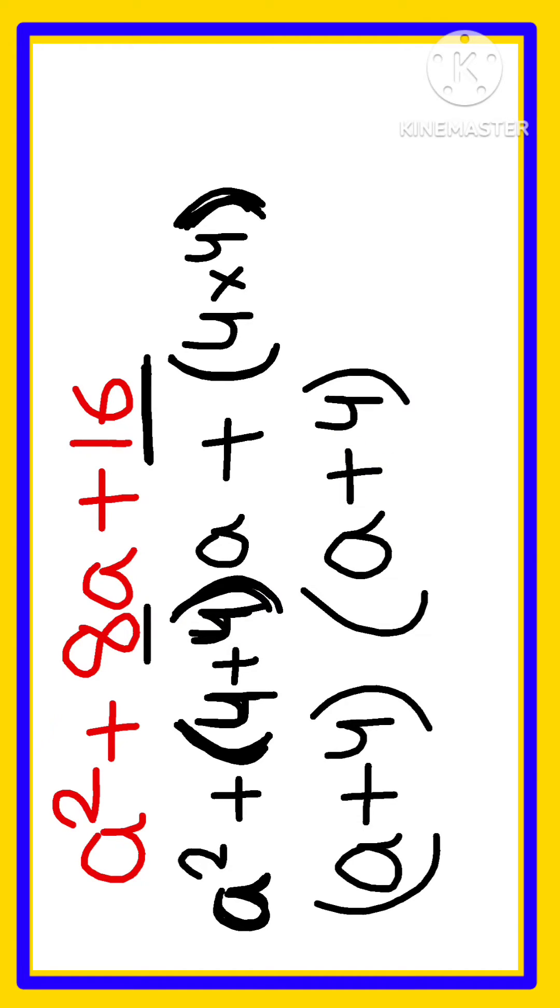You can get separate numbers in other cases, but remember: the coefficient, the number before variable a, is written as the sum of two numbers (4 + 4), and when those same two numbers multiply, you get the constant term. 4 × 4 = 16.